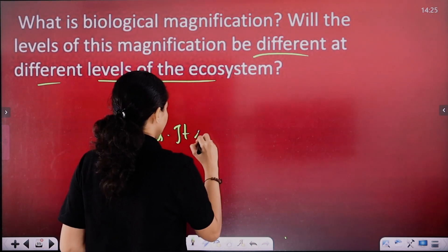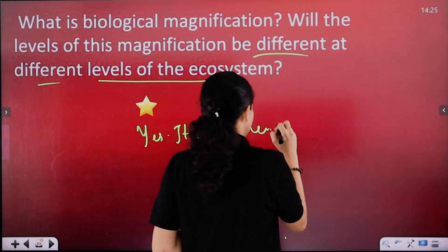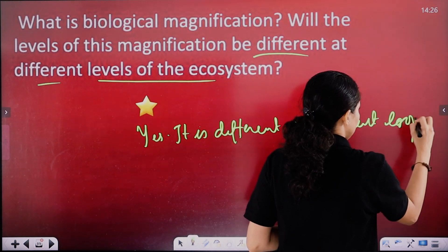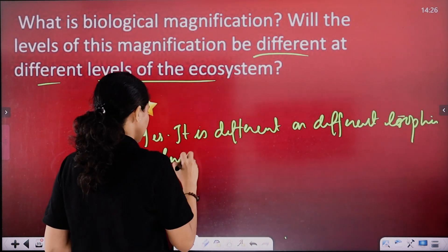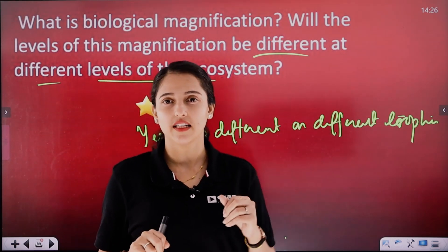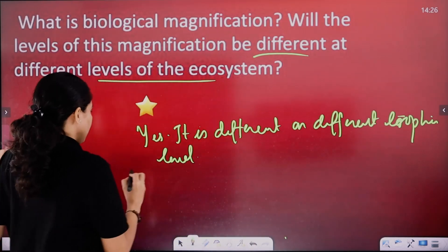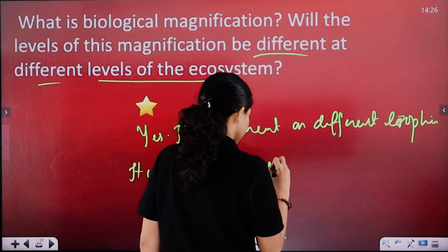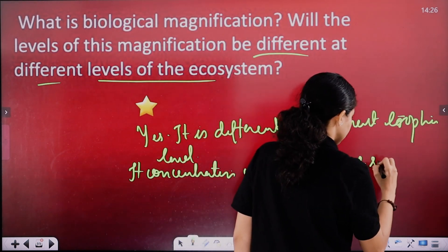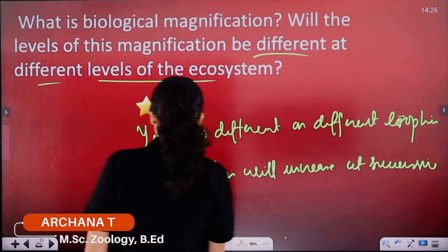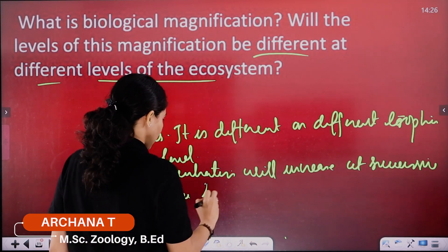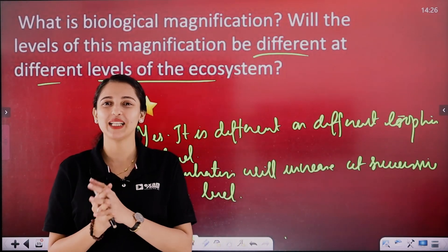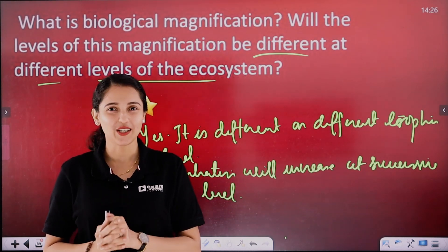Yes, it is different at different trophic levels. What is the concentration at each trophic level? It is different, and it is increasing. As we go to higher trophic levels, the concentration of this toxic substance increases — that is biological magnification. It is an important topic.